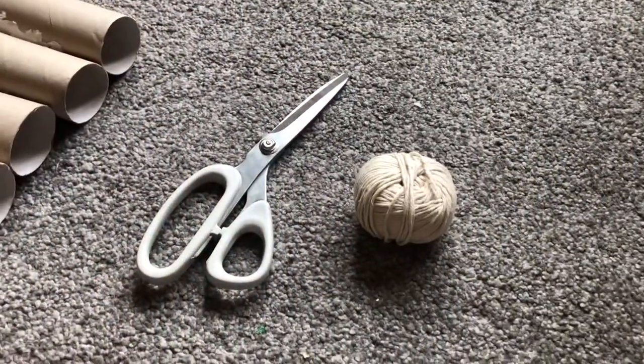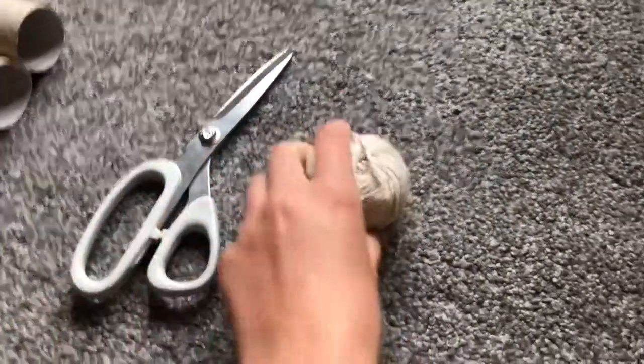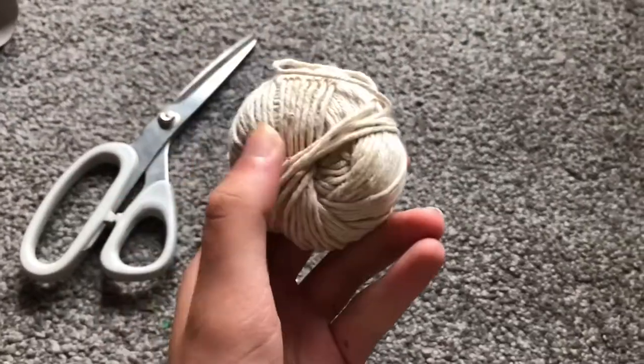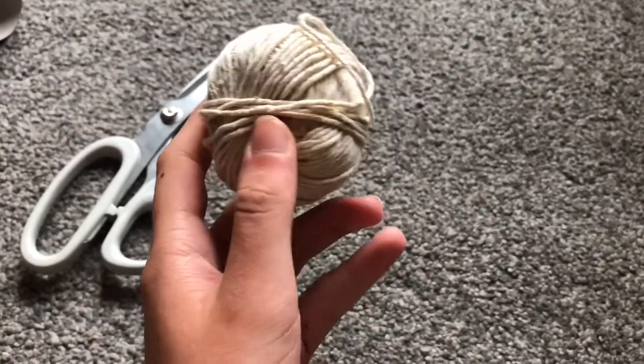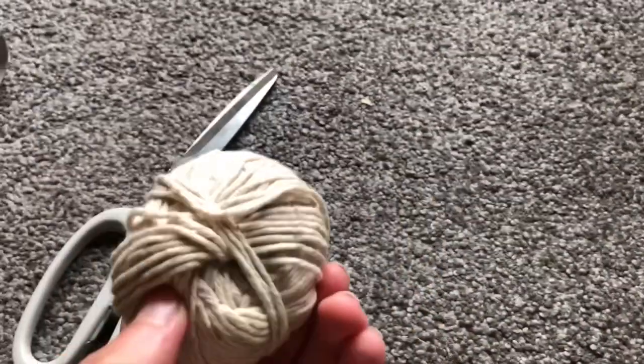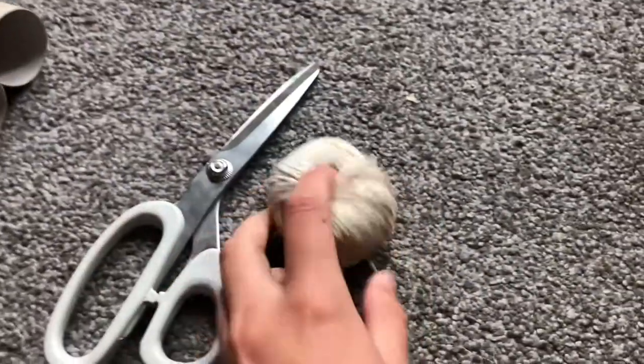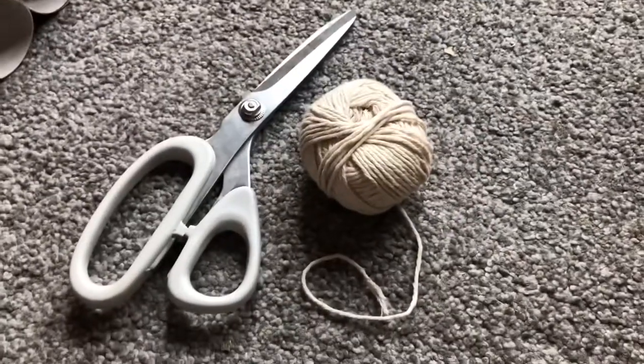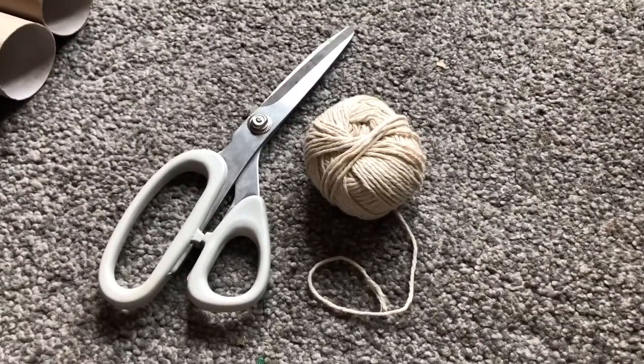This DIY requires some scissors and some string. Preferably, it's best to use string that's called twine or sisal string. The reason you shouldn't really use bleached string is because it's bleached to get the color to be white. However, if your pets don't really chew, then I guess you could always use this, but it's just preferred to use twine.